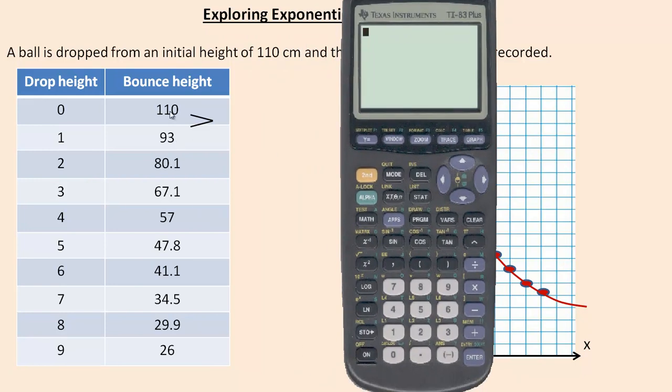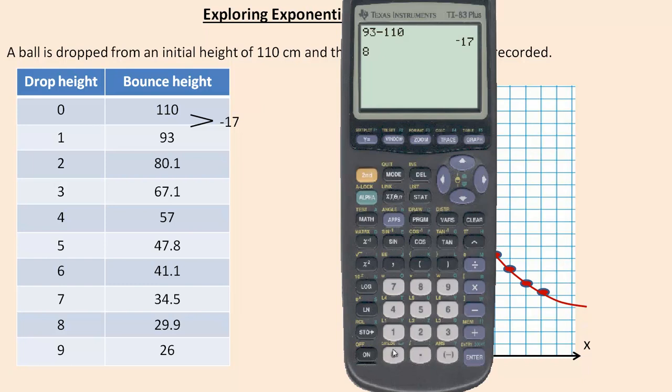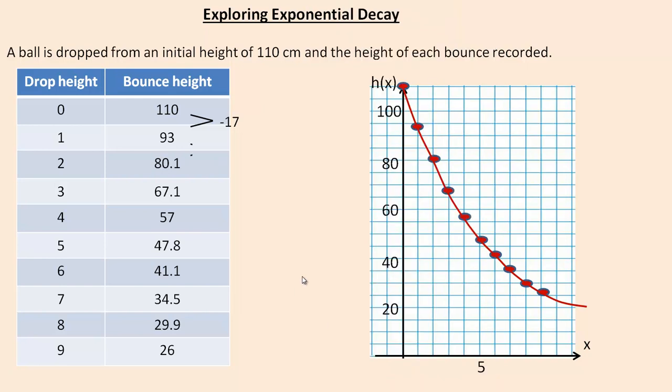So to find the difference, how much has changed from 110 down to 93, I would go 93 minus 110. And it's gone down 17. From the next one, 80.1 minus 93. Notice I'm subtracting the 80.1 minus 93, not 93 minus 80.1, because I want the change from this down to this. This is the final place as we go from this number to this number. So this would be negative 12.9. Let's do another one. From 80.1 to 67.1, it's gone down 13.